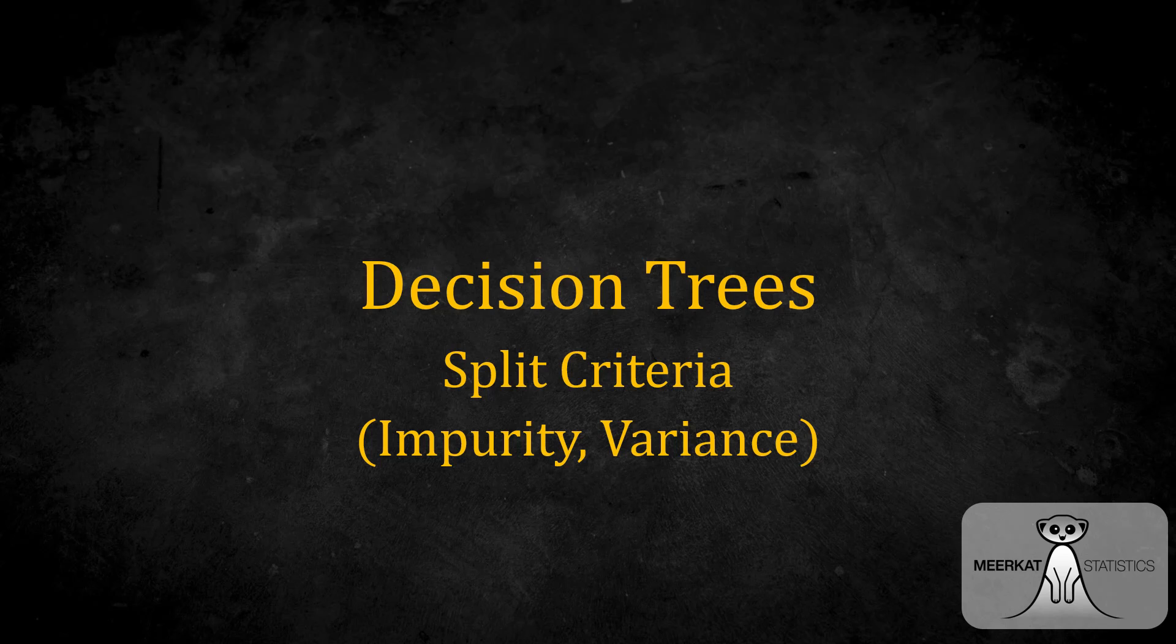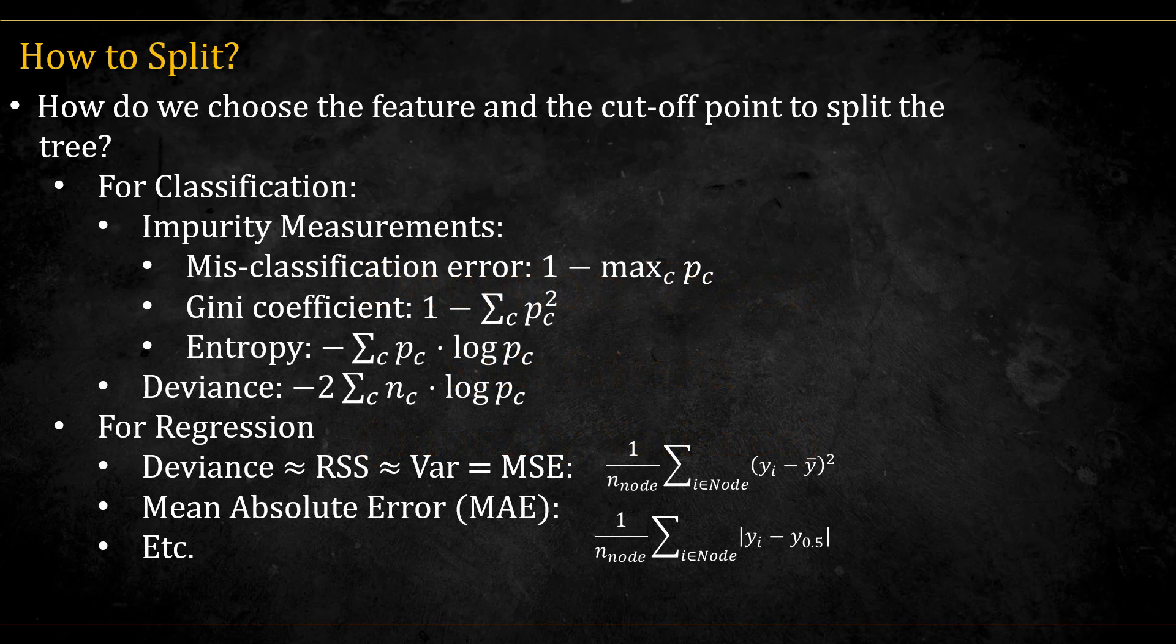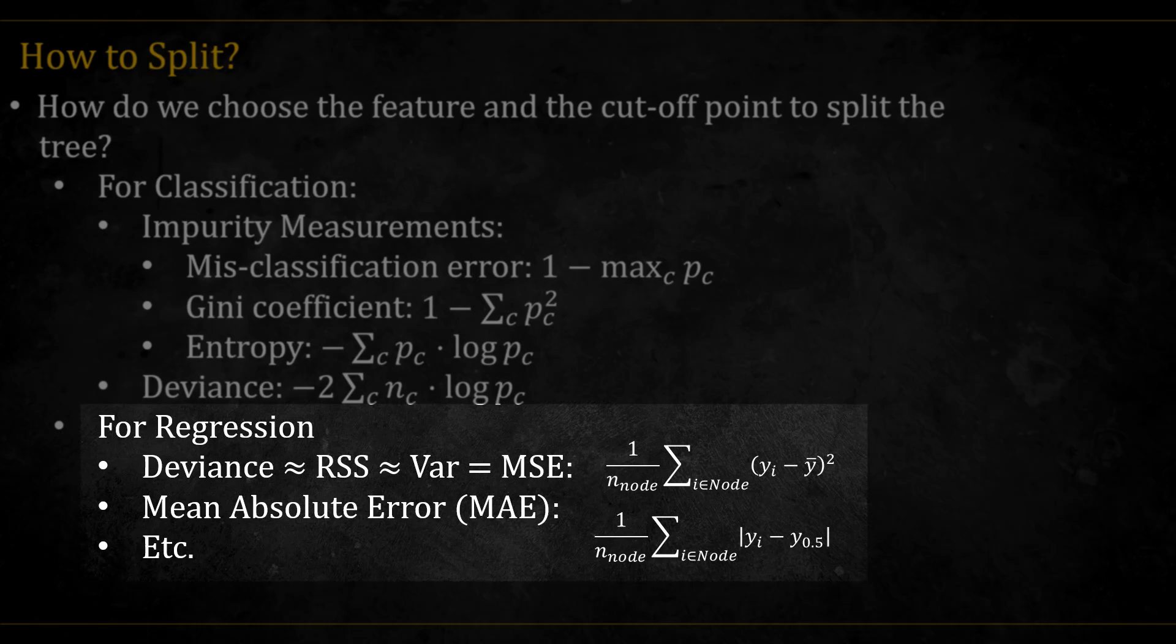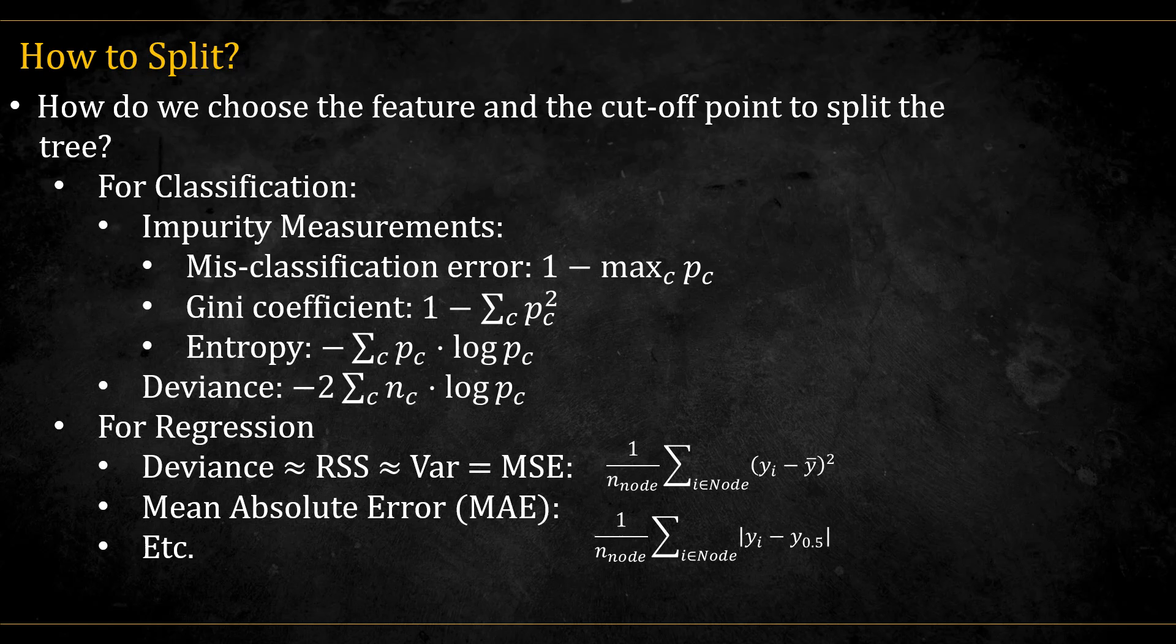In this video, we will talk about the split criteria used to determine the best split in a tree node. As mentioned in the previous video, there are different criterias. For classification, the main criteria are the impurity measurements. For regression, it's the variance or the spread of the points in each node or bin. Let's get into them one by one.